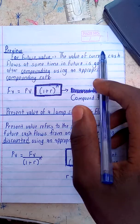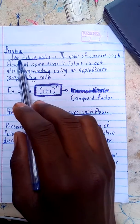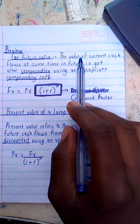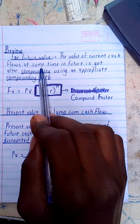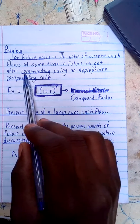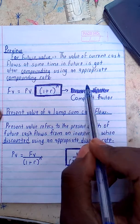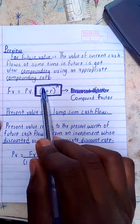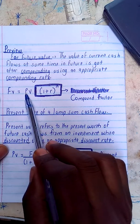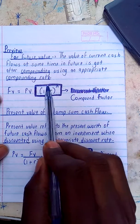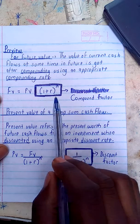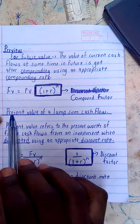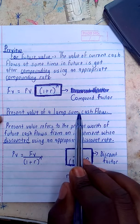From a preview, we had the future value. The future value of current cash flows at some time in the future is gotten after compounding using an appropriate compounding rate. From that we had a formula where FV is equal to PV multiplied by the compound factor.